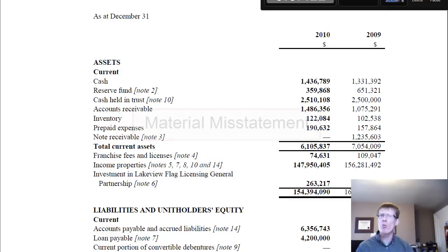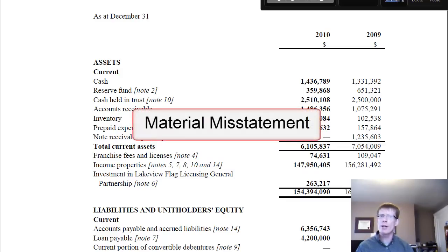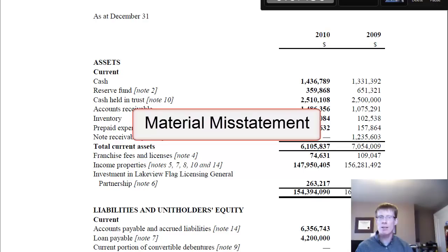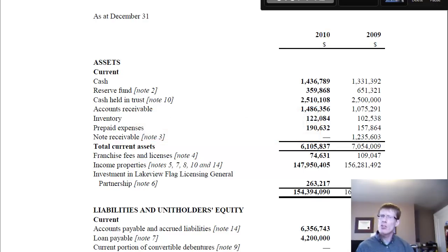Notice I used the word material misstatement, not just misstatement. Material implies a misstatement of an order of magnitude that it would change a user's decision when relying upon the financial statements. We're going to discuss this in much greater depth in a later lesson.